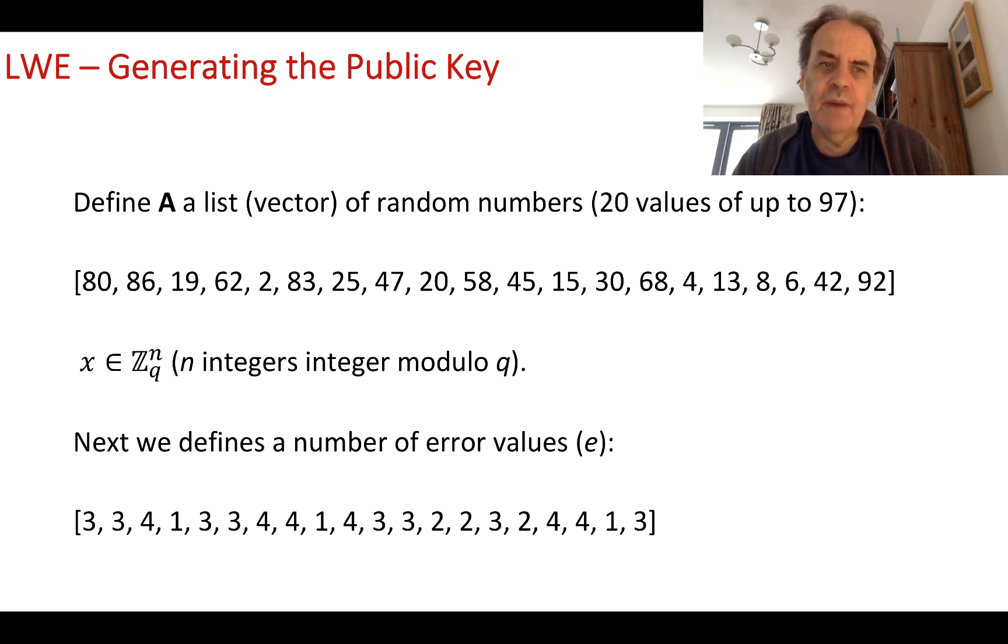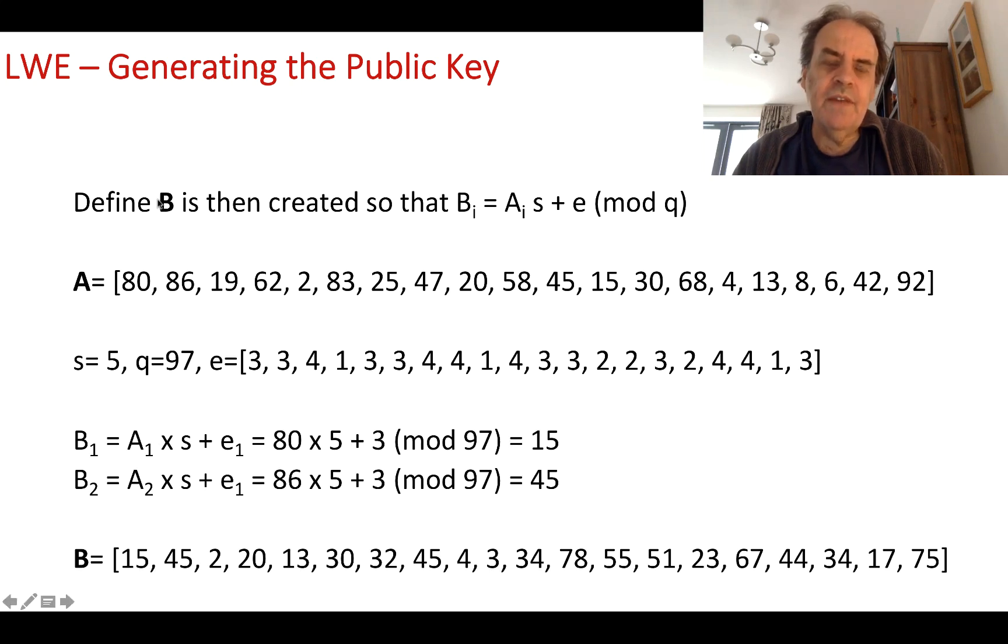The first part of our public key is A. We then define B, where each element of B equals A multiplied by S plus E, modulo Q. We always use mod Q in cryptography because it allows the operations to carry through. So with our A values, we pick a secret value of 5, Q is 97, and here's our error list. We'll now calculate each of the values of B, where B1 equals A1 times S plus E1.